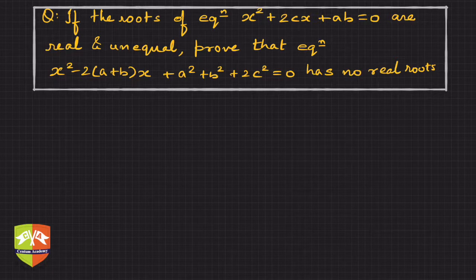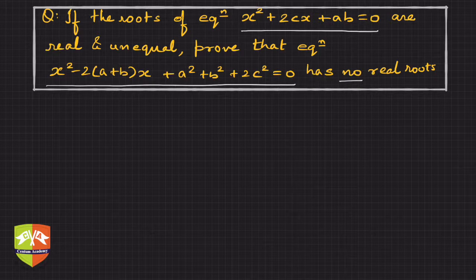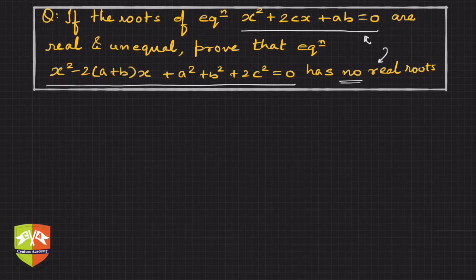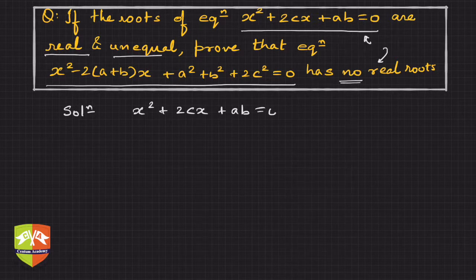We are taking up a question where it is given that if the roots of the equation x² + 2cx + ab = 0 are real and unequal, prove that the other equation has no real roots. So certain conditions are to be met based on the first given information, and using that you have to prove the second part. The moment you see the words 'real and unequal', for a quadratic equation those roots require a specific discriminant condition.